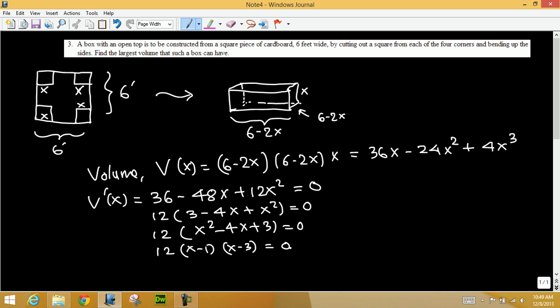So X minus one equals zero or X minus three equals zero. From this we get X equals one. From this we get X equals three. Okay, so the total was six. If we cut three out, then we don't get a box, so this is not the case. We cannot have X equals three. So X equals one is the answer.